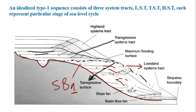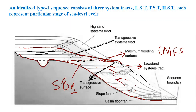The transgressive system track is bounded above by the maximum flooding surface, highlighted here in maroon. The transgressive system track is bounded below by the transgressive surface — shown as a dashed line — and above by the maximum flooding surface. Such a system track is termed the transgressive system track.